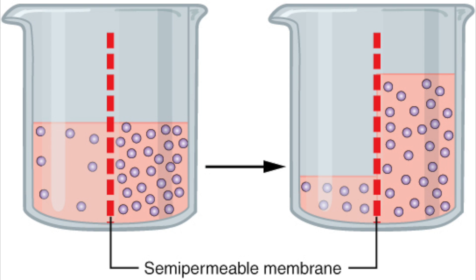However, osmosis is the movement of water across a partially permeable membrane from a region of high concentration to low concentration, which is across the concentration gradient from high to low concentration.